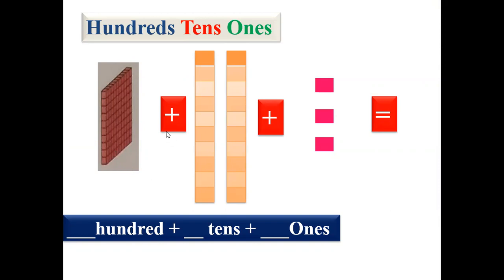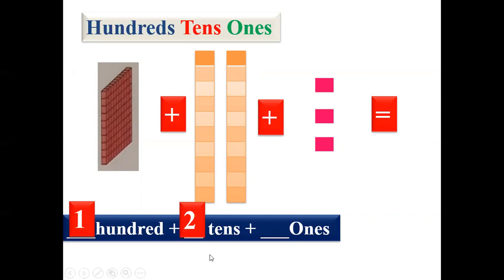What we are going to do is write down how many hundreds, how many tens, and how many ones there are. So come on, start counting with me. This is one hundred block, so we'll write here number one. Then these are two tens blocks, so we'll write here two. And now we can see one, two, three — three ones blocks are there, so we'll write three.